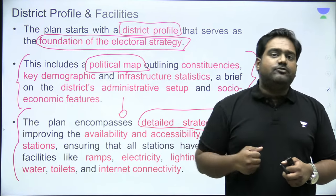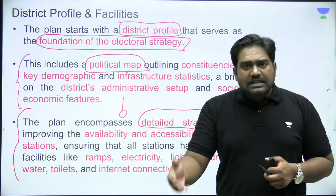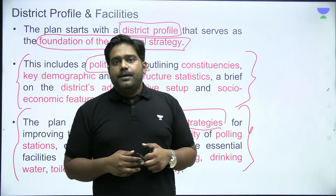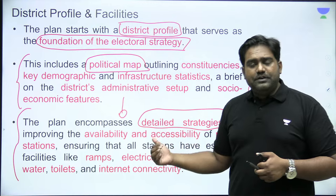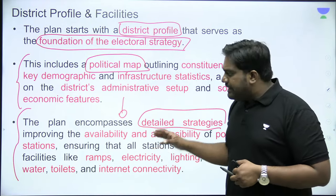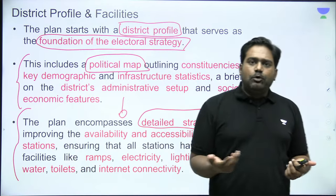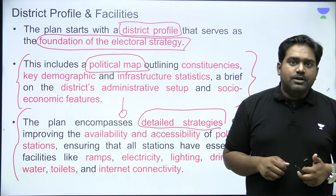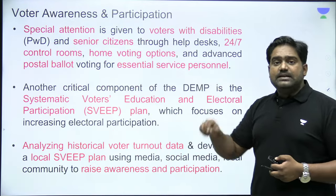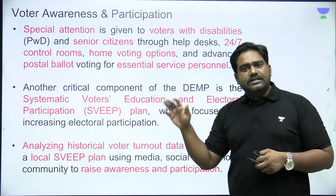For every polling booth, basic facilities must be ensured: a ramp for senior citizens and the physically disabled, wheelchair facilities, parking in cities, drinking water, and toilet facilities — which are very important for election officials who come a day prior and remain at the polling station for at least 30 to 40 hours. In remote hinterlands or rural areas, if there is no toilet or water, polling officials will find it very challenging to function. All these details — how many schools are available, which will serve as polling booths, what facilities need to be created — are documented in the plan.